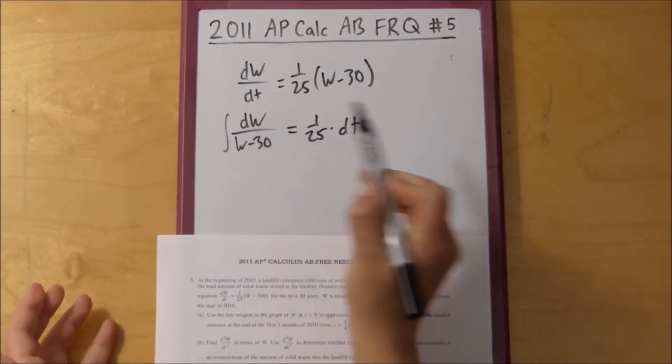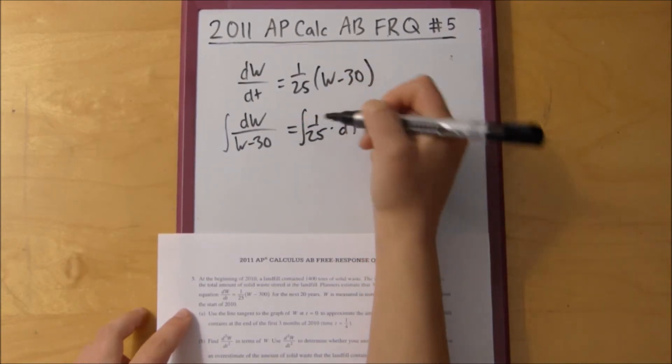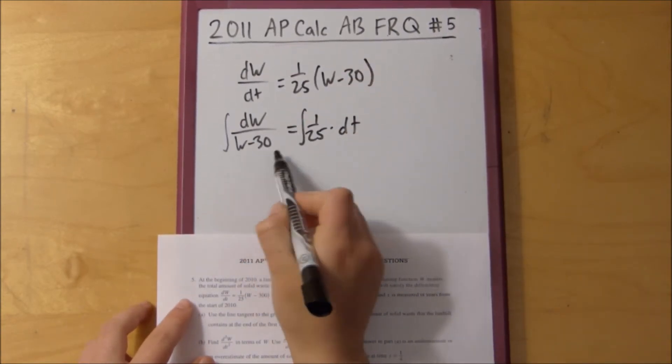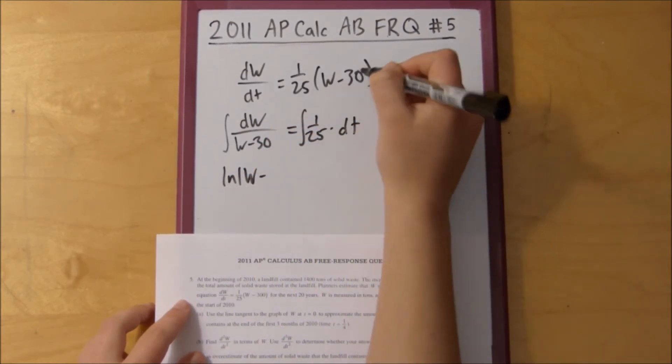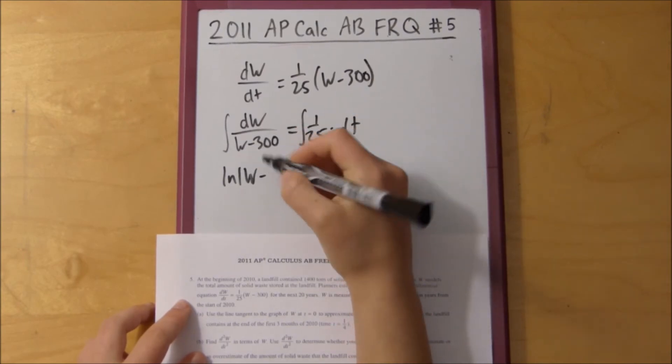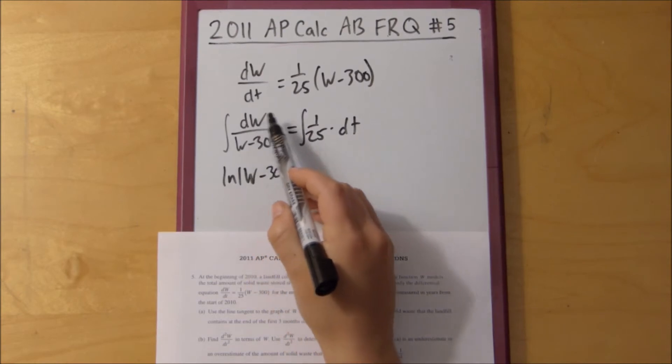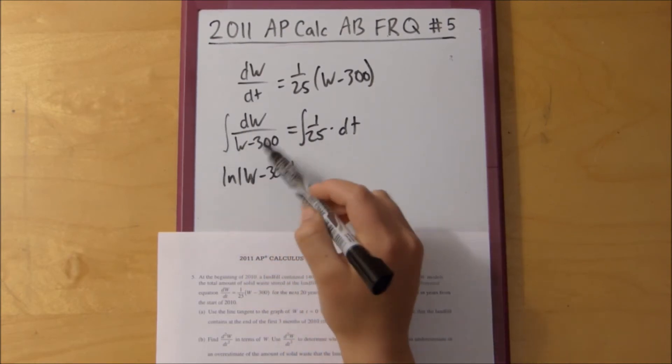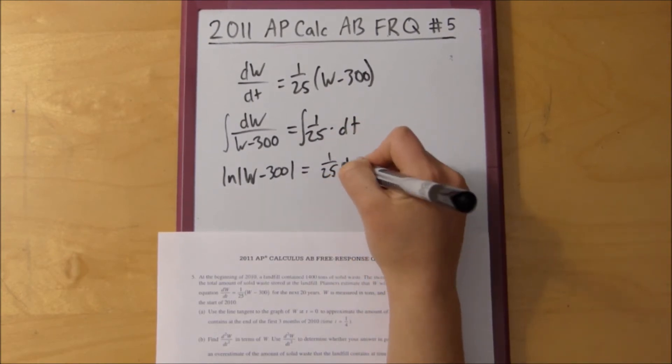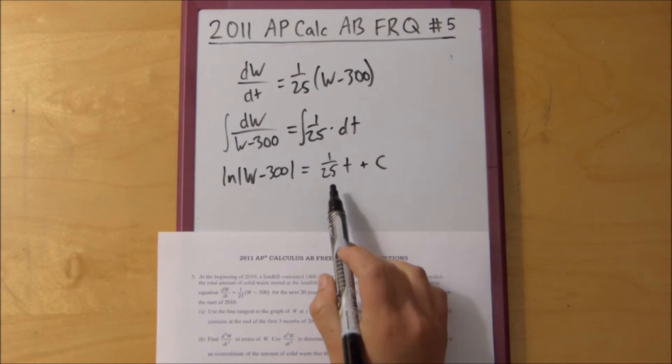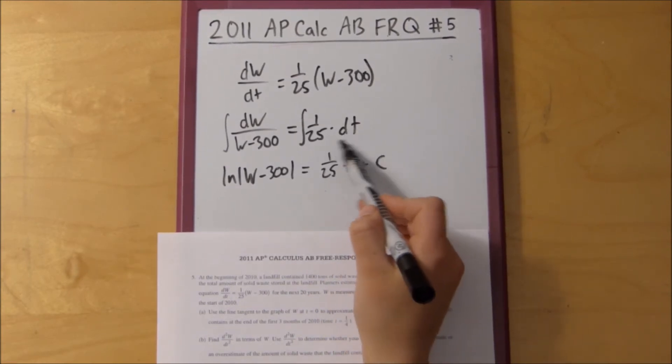And then we're going to integrate both sides. Because we have a dw here and a dt here, but we want this in terms of w. So integrating this is simply ln of w minus 300. This is just any time you integrate something that's 1 over w minus 300, it's just going to be ln of that. And then this is simply 1 over 25 times t plus c. And you know this is going to be in terms of t because we have our dt over here.